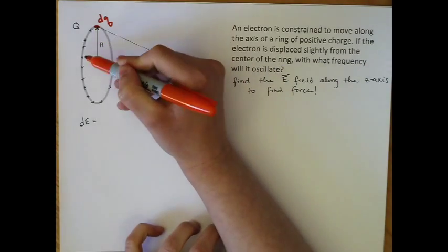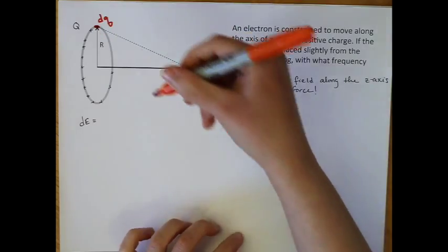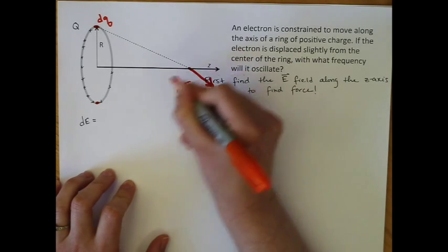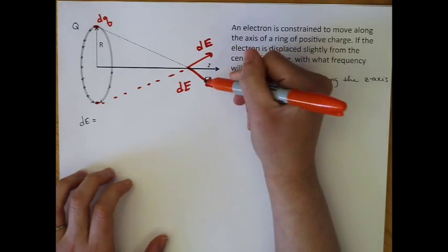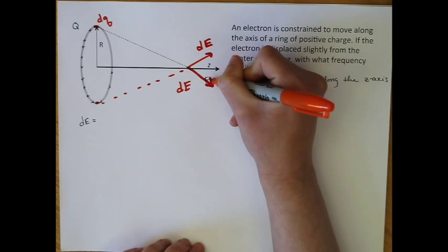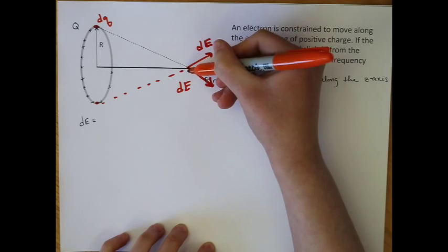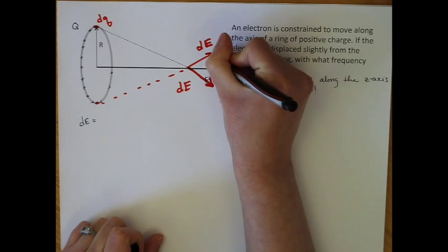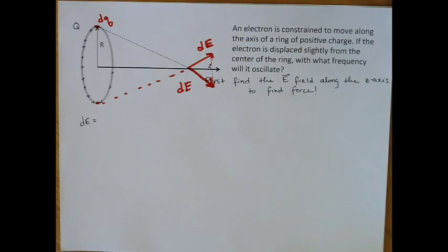Now, this is a vector. And all of the little pieces of dq around this circle will produce a little vector. But for every dq I have on one side of the ring, there's a dq on the other side that produces a little dE vector whose component parallel to the z-axis will cancel with this one. The component in the x-y direction here, this component is going to cancel with this component. And that will happen all the way around the ring. So we're only going to get contributions in the z-direction.